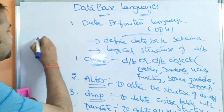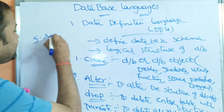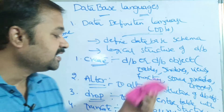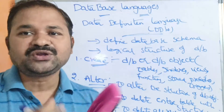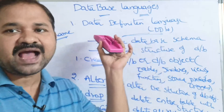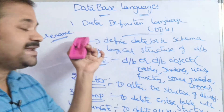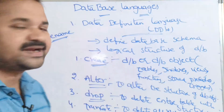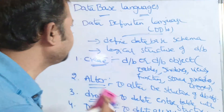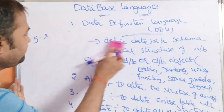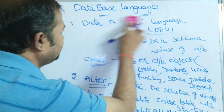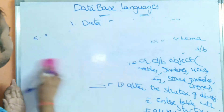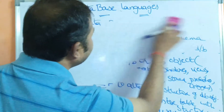The last Data Definition Language command is the RENAME command. It is useful in order to rename a database object. If we want to rename a table or a function, we use the RENAME command. So in total, DDL has five commands: CREATE, ALTER, DROP, TRUNCATE, and RENAME.